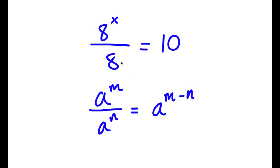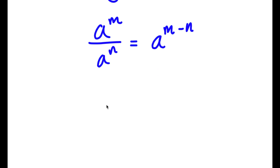So 8 to the power of x over 8 — well, 8 is the same thing as 8 to the power of 1 — so I get 8 to the power of x minus 1 is equal to 10.